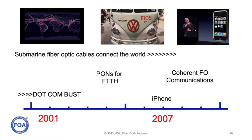But the bust had a different effect. Strong companies survived, and the prices of fiber optic components declined dramatically — almost 70% in some cases. That led to the next era in fiber optics: the development of fiber to the home. The two major elements were the reduced cost of components and the development of passive optical networks for fiber to the home, which suddenly made it possible for telephone companies and others to consider connecting homes directly on fiber optics.